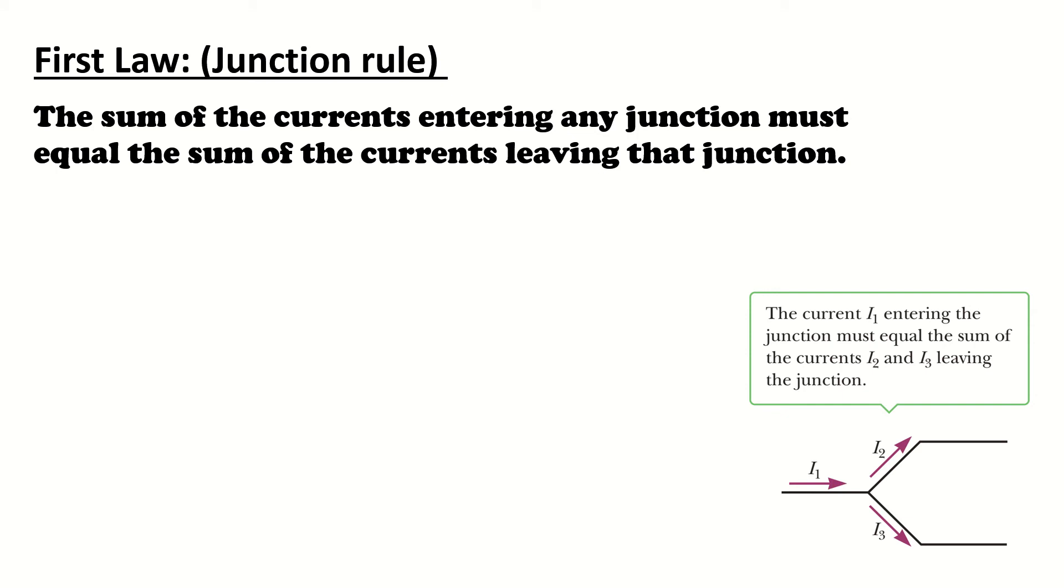The Junction Rule is a statement of conservation of charge. Whatever current enters a given point in a circuit must leave that point because charge can't build up or disappear at a point. If we apply this rule to the junction in the figure, I1 equals I2 plus I3, or Sigma I equals 0 for a junction.